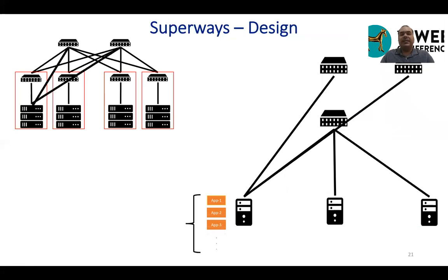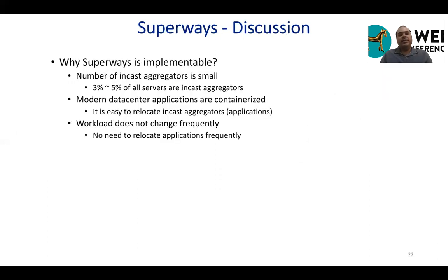The whole topology will look like this after adding the extra links. Only one portion of the data center will host these in-cast applications, and only that part of the topology will have extra links — you do not need to add extra links throughout the entire data center network. Why is Superways implementable? The number of in-cast aggregators is small: analysis on a publicly available Facebook dataset shows that only three to five percent of all servers are possibly in-cast aggregators. Also, modern data center applications are containerized, making it easy to move applications around, and workloads do not change frequently so relocations are rare.